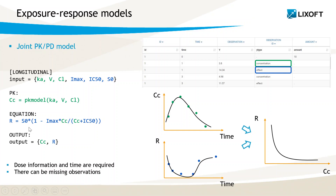In this simple example, the exposure is the PK concentration CC, modeled with a one-compartment model with a first-order absorption and a linear elimination, and the PD model for the response R is a direct inhibition induced by the concentration. This type of model requires the dosing information and measurement times in order to produce a prediction versus time for each type of observation.